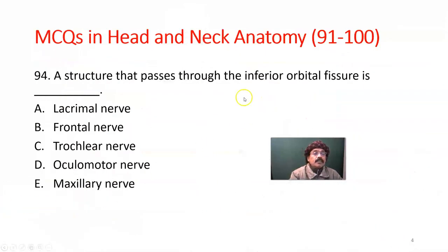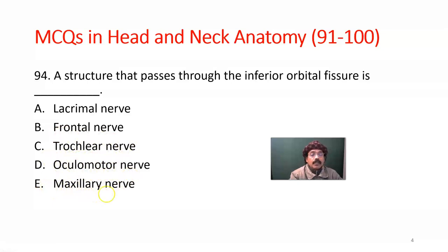A structure that passes through the inferior orbital fissure — what structure? The choices are lacrimal nerve, frontal nerve, trochlear nerve, oculomotor nerve, and maxillary nerve. The answer is the maxillary nerve. Question 94 is the maxillary nerve.